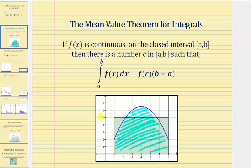In this case, f of c would be five, which is also called the average value of the function over this interval — we'll mention that again later. The x values that give us this function value would be the value of c, and notice in this case that occurs twice.